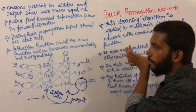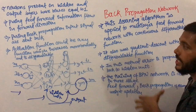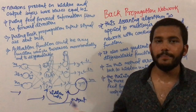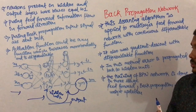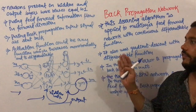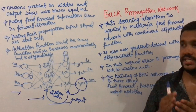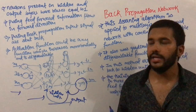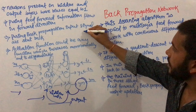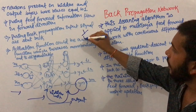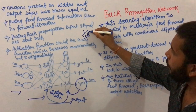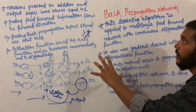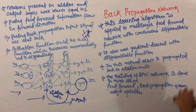The activation function used in back propagation network must be monotonically increasing and differentiable. Generally, functions of the type 1 divided by (1 + e^x), that is the sigmoid type of functions, are used for back propagation networks.